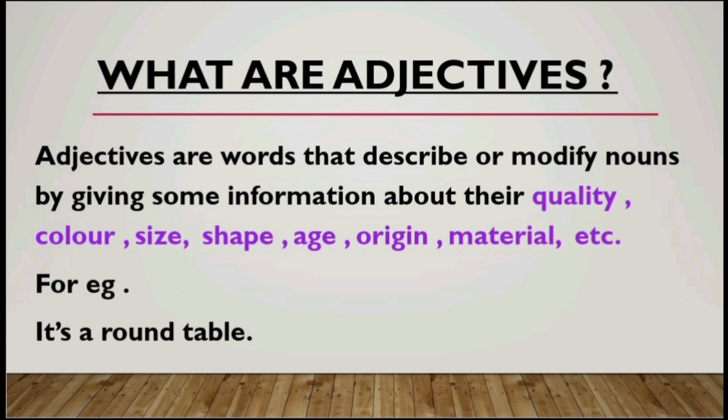Have a look at this example: it's a round table. Here the noun is 'table,' and how is the table? It is round. That is the description of the shape of the noun. Therefore, 'round' is an adjective here — adjectives are the words that describe nouns.